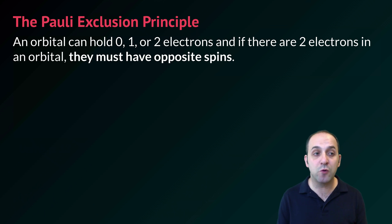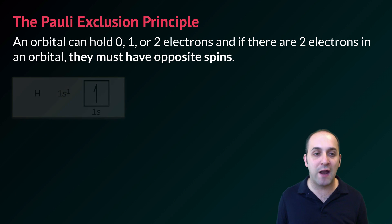The first is called the Pauli exclusion principle, and it states that an orbital can hold zero, one, or two electrons, but that if there are two electrons in an orbital, they have to have opposite spins, which we'll represent in our box diagrams as an up arrow and a down arrow.